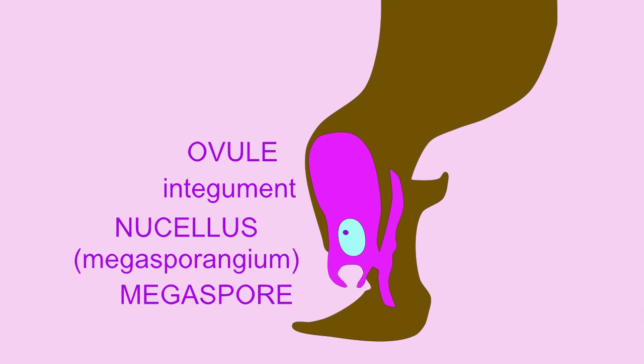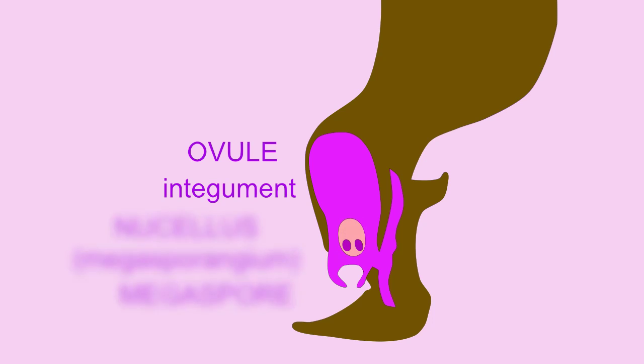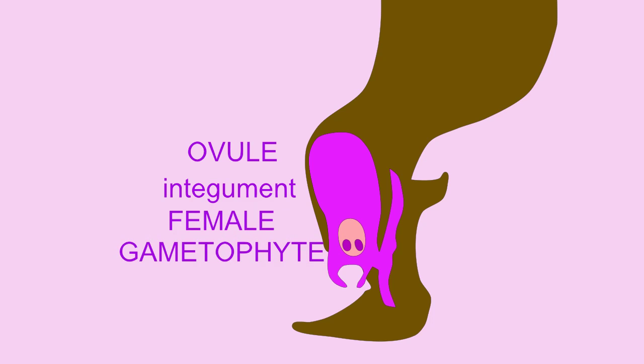This haploid cell, over the course of a year, will produce the female gametophyte composed of a thousand or so haploid cells. At the base, there are two reproductive structures known as archegonia, which contain eggs which are large enough to see without a microscope.